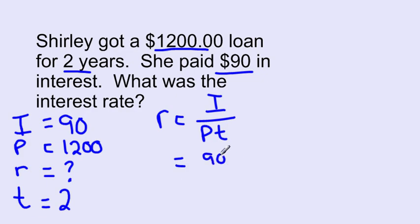I is $90. P is $1,200. And T is $2. $1,200 times $2 is $2,400.